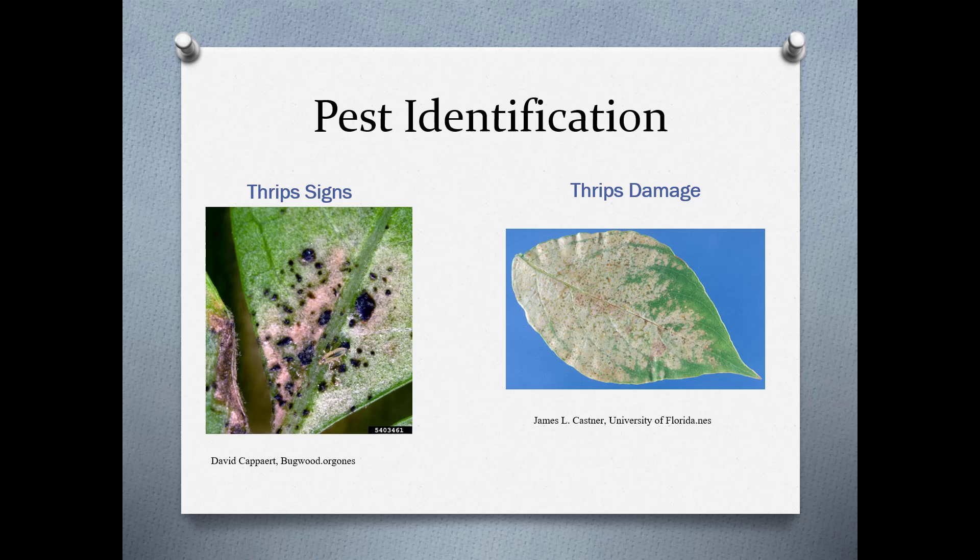Thrips are some of the most damaging pests in nurseries and landscapes. For the most part, you will see the damage before you see the pests. They have piercing, rasping mouthparts and scrape the underside of a leaf. You'll see the damage or the signs—the signs shown here include the insects themselves. This is a really tiny insect that's difficult to see without a hand lens, but these are the spots they leave behind. This is frass.